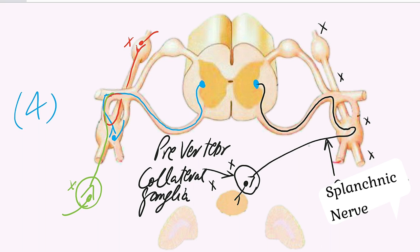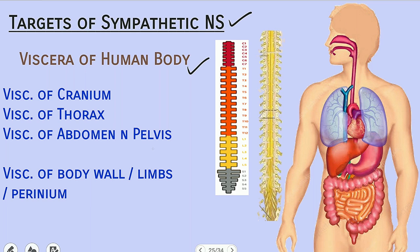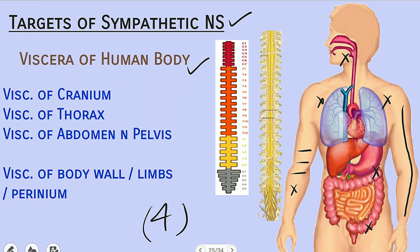A crucial fact about the splanchnic nerve: some splanchnic nerve fibers move toward the adrenal medulla directly and do not have a second neuron. They convey a message directly to the cells of the adrenal medulla, which then secrete their products directly into the blood. This is a very special function of the sympathetic nervous system — the pre-ganglionic neuron directly innervates a viscera, which is the adrenal medulla. The sympathetic nervous system has four plans to supply the viscera: for viscera of the cranium (T1-T2), thorax (T2-T5), abdomen and pelvis (T5-L2), and body wall and limbs (all 14 segments, T1-L2).